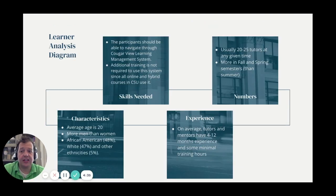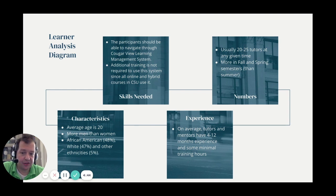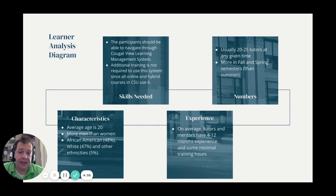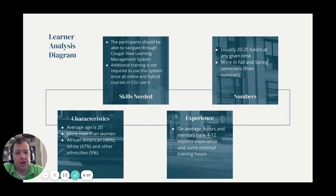Finally, over these next two slides, we have the learner analysis diagram, which gives us a sense of this pool of tutors and mentors. The average age is 20, with a fairly balanced split between African-American and white participants along with a few of other ethnicities. Skills they already have include the ability to use the LMS at CSU. Generally, there are 20 to 25 tutors working there at any given time, and there is fair turnover, with most tutors working there for about a year or so.